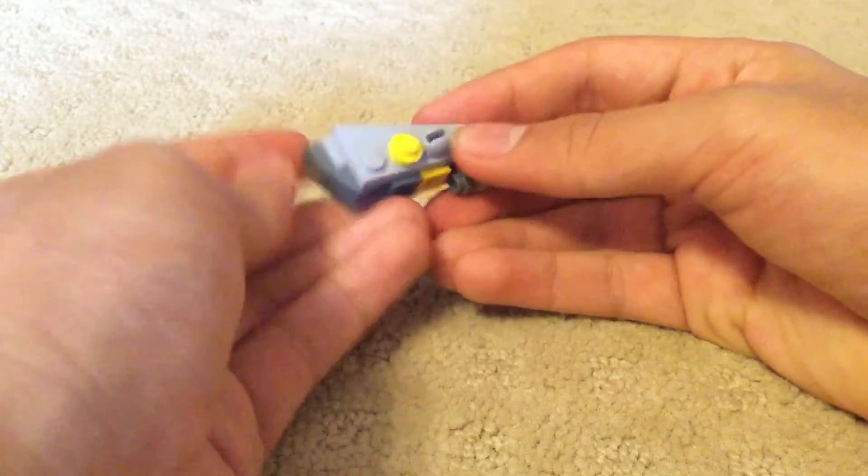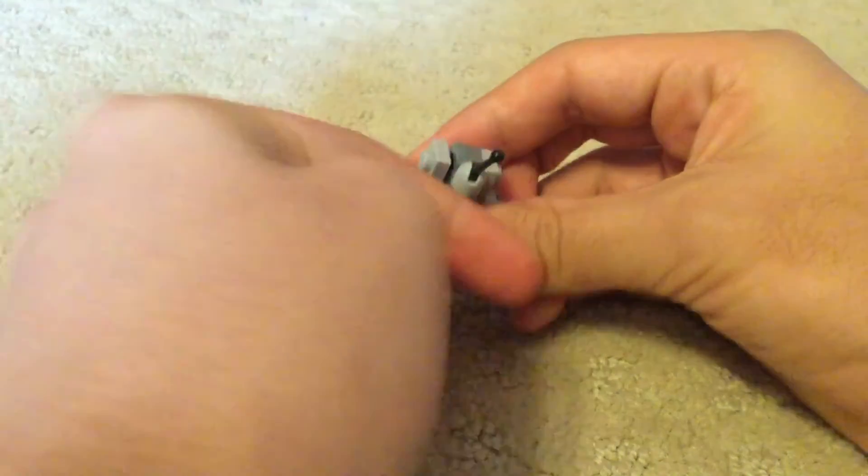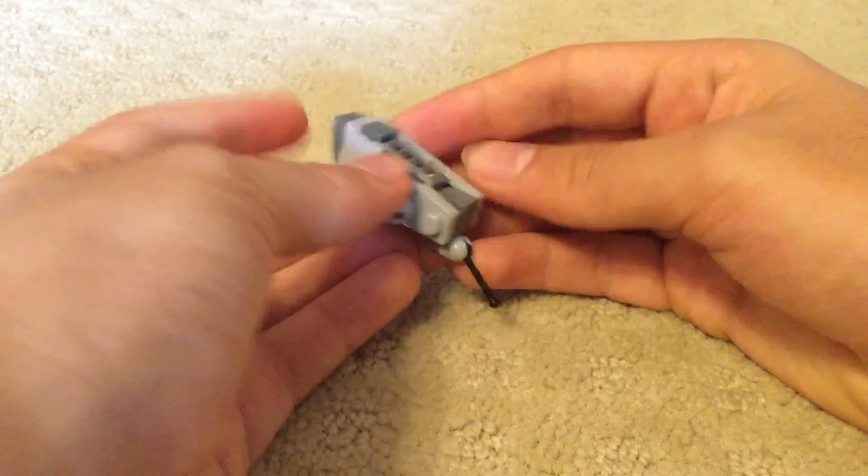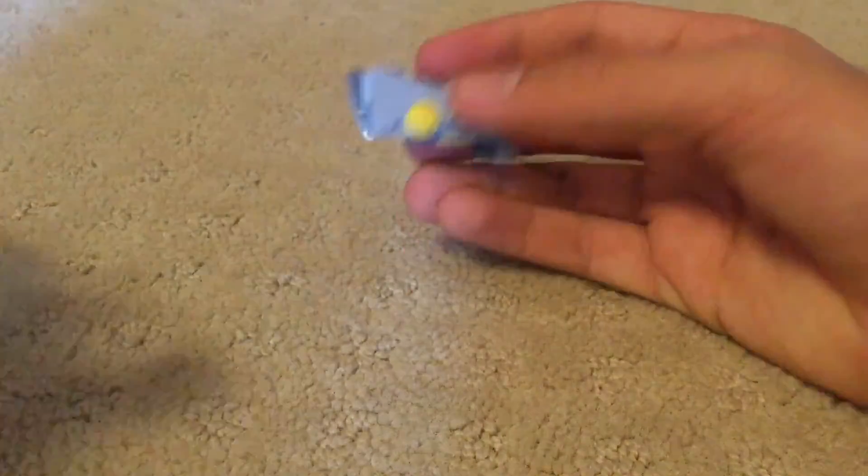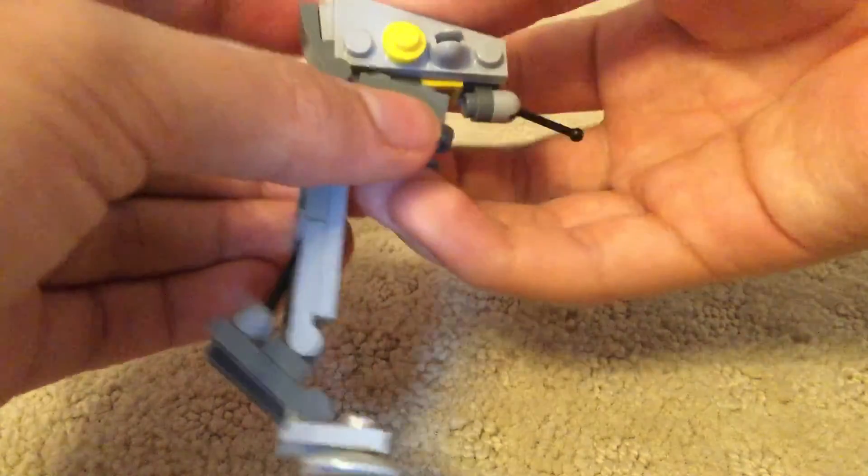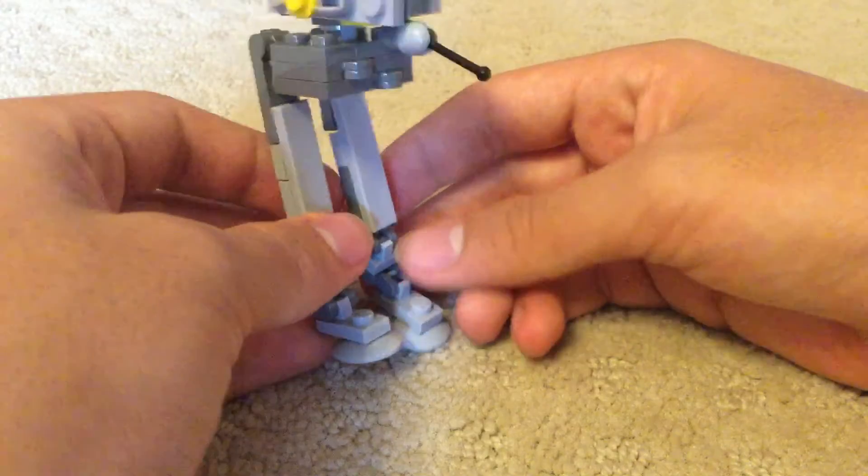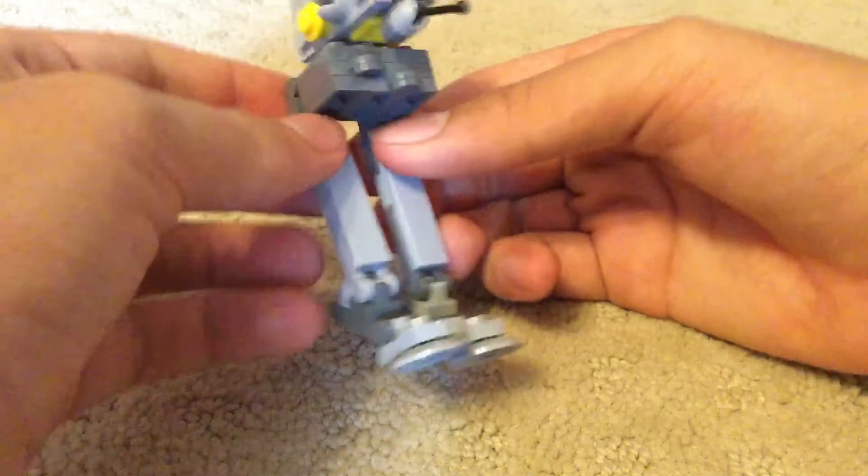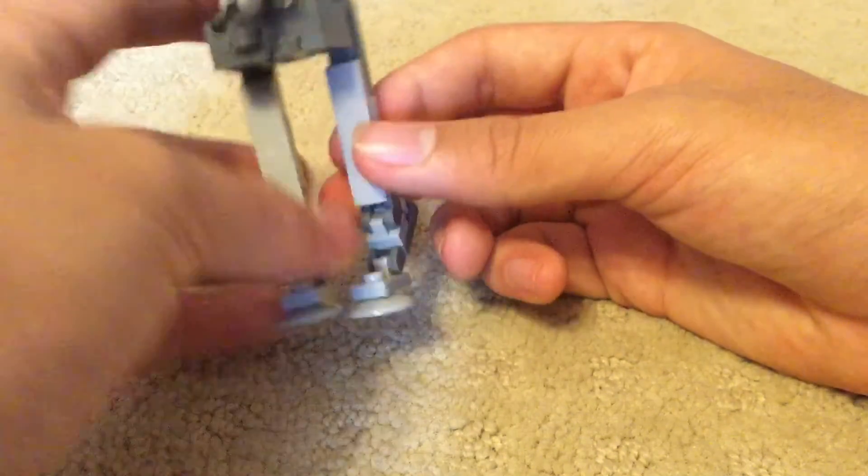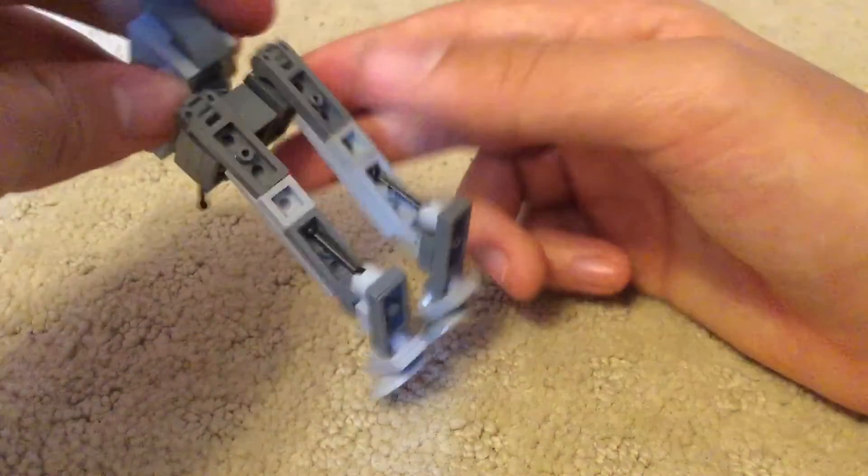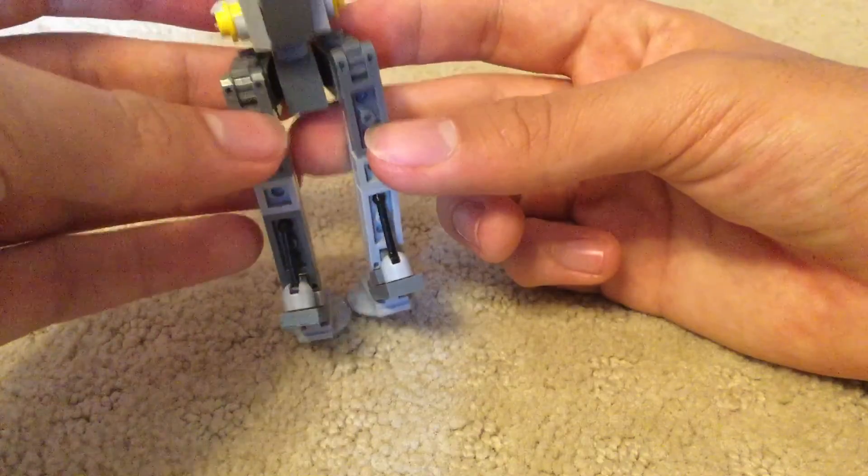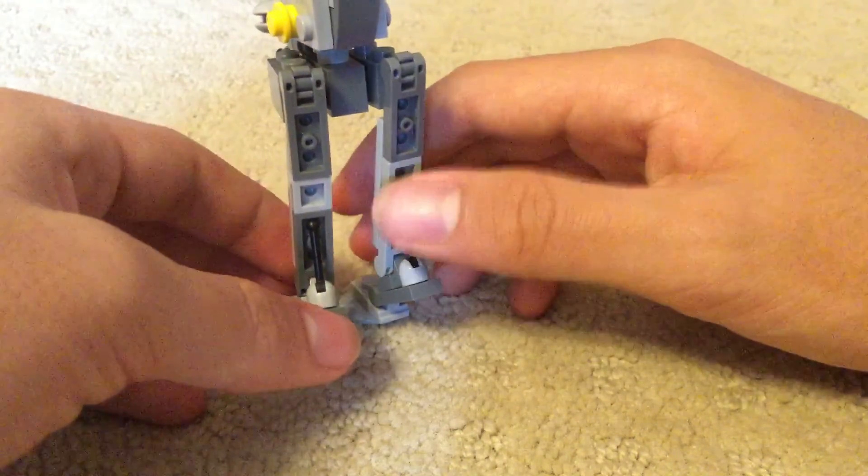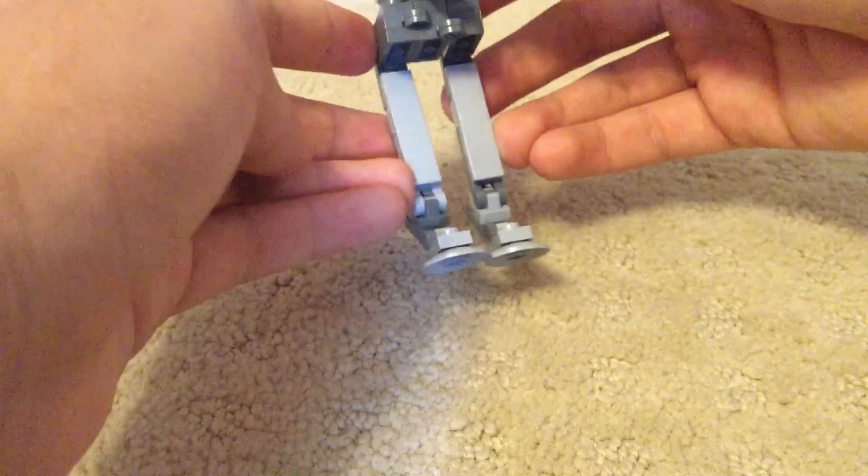It kind of looks like a weird robot animal with little sight things or bubbles. You can go ahead and attach this to the main body and there you go, you have your completed ATDP from Star Wars Rebels. When you want to have it walk, you want to have it at a little degree like this, that's how it should look.